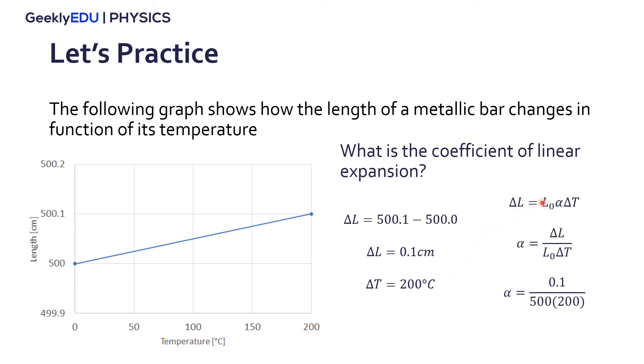Now, if you rearrange the formula for the linear expansion, we can isolate the coefficient of linear expansion. And inserting the values here, the variation in length is 0.1 centimeters, the initial length is 500 centimeters, and the variation in temperature is 200. And it gives us this coefficient of linear expansion of 1.